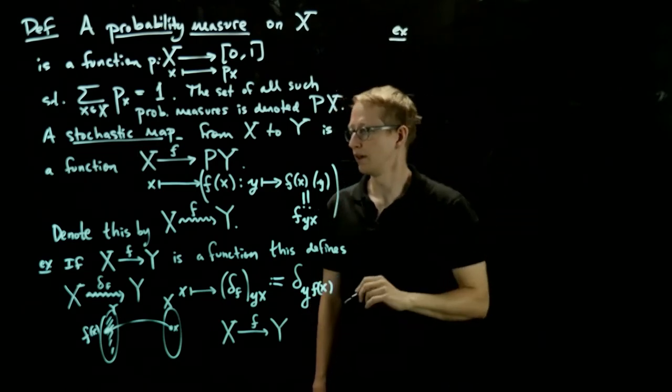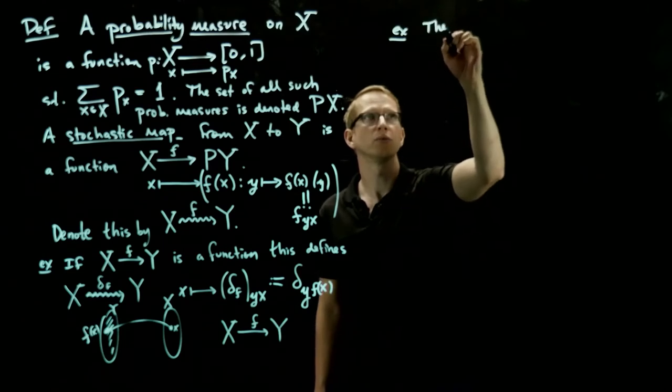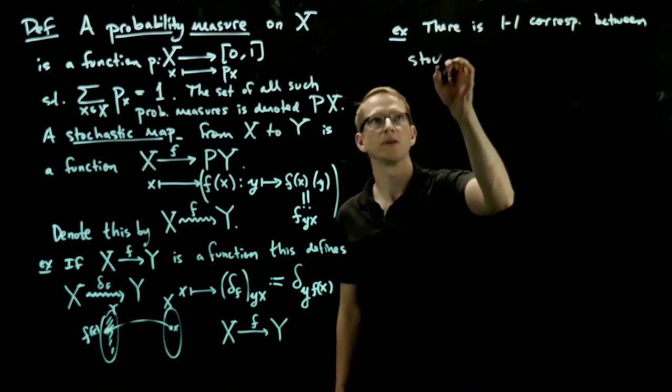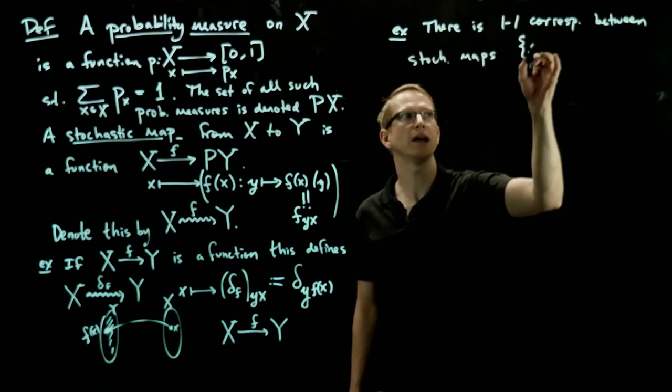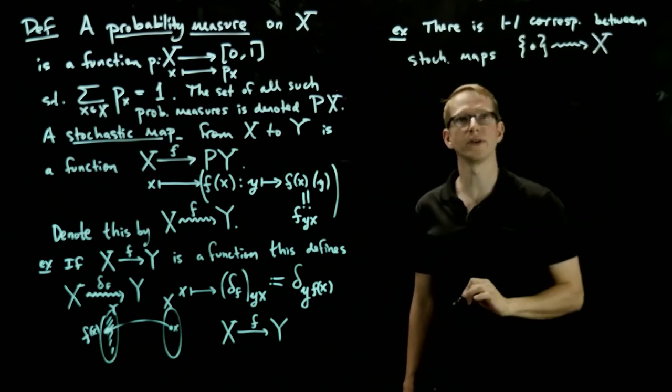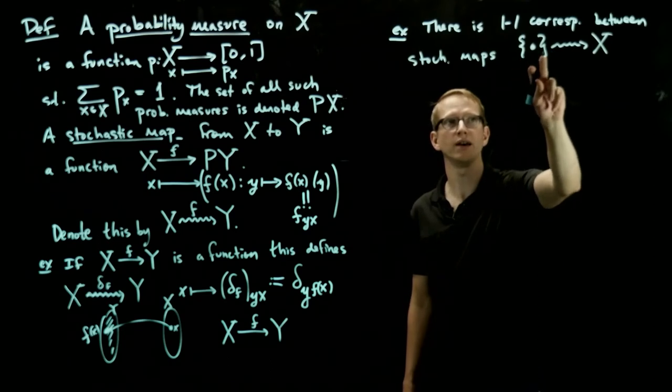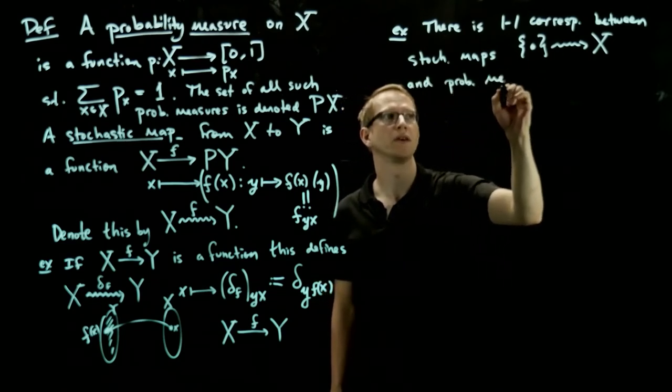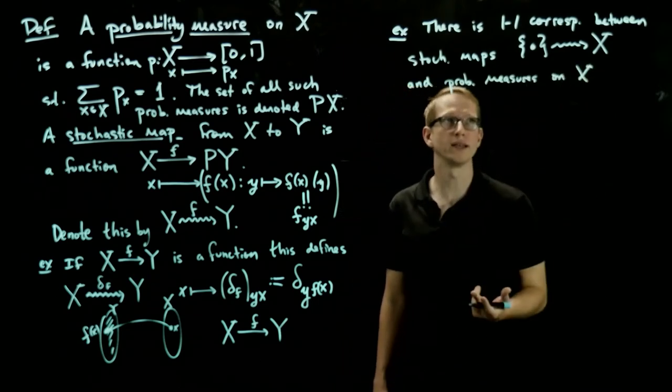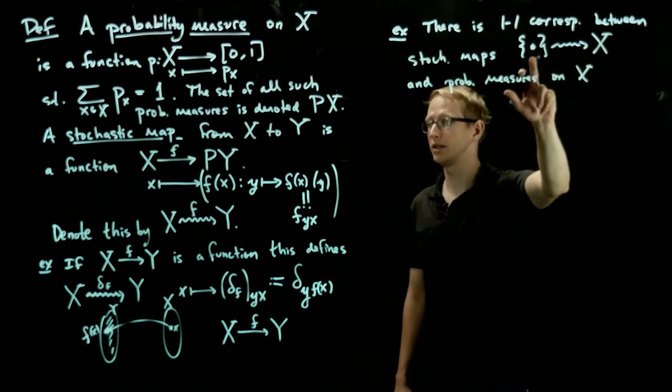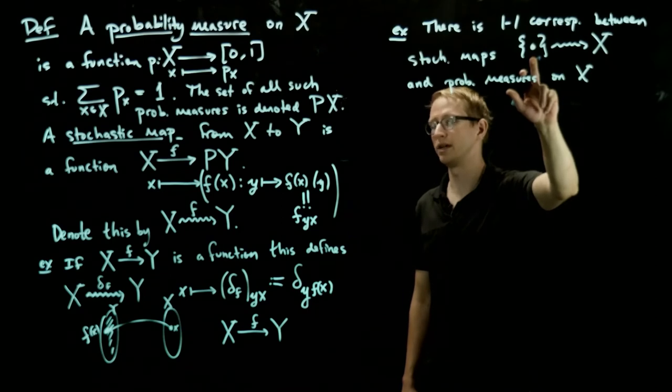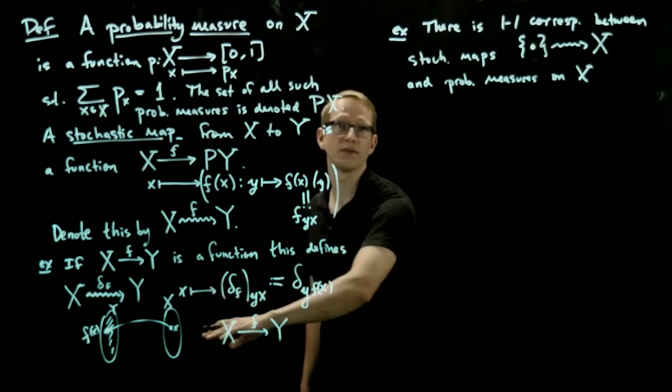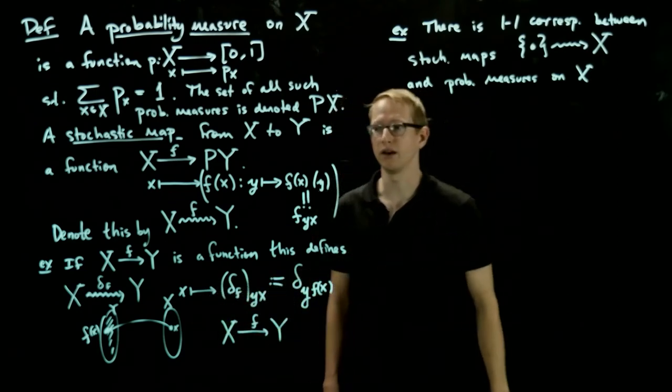So another example, there is a one-to-one correspondence between stochastic maps from a single element set into another finite set X. So this is going to be my notation for a set containing a single element, which I'm just calling a bullet, and probability measures on X. Why is that? If I have a stochastic map, I apply it to an element of the domain, and that gives me a probability measure on X. But this only has one element, so I only get one probability measure. So in general, a stochastic map is, you can think of it as a family of probability measures indexed by the domain of that stochastic map.